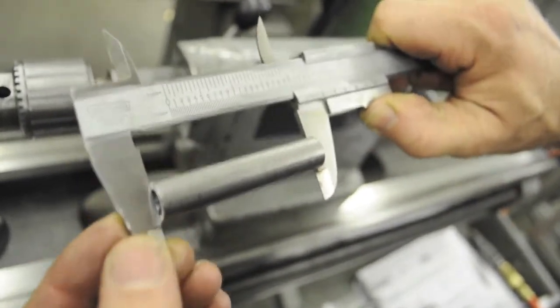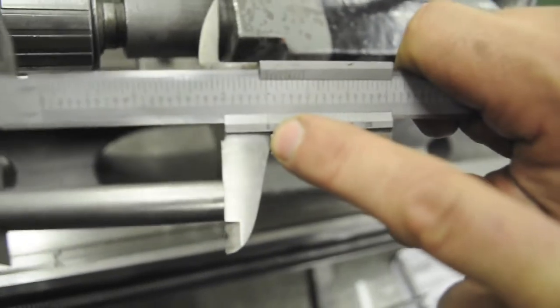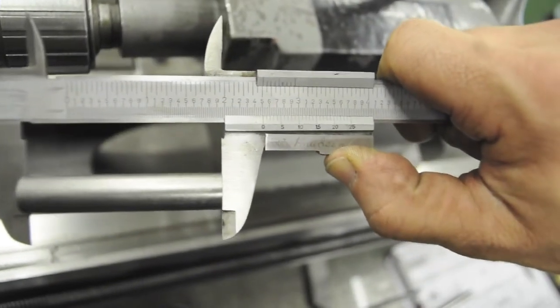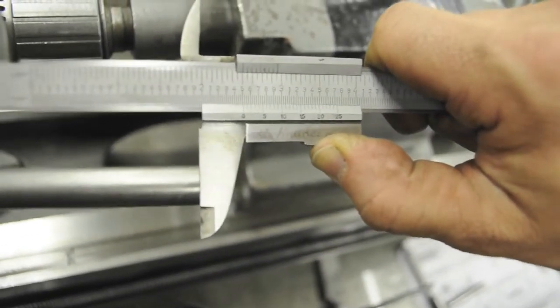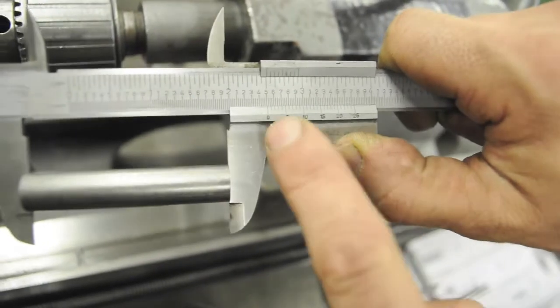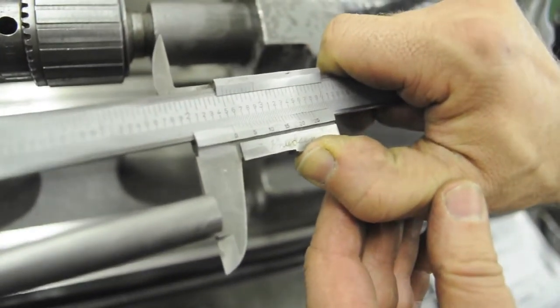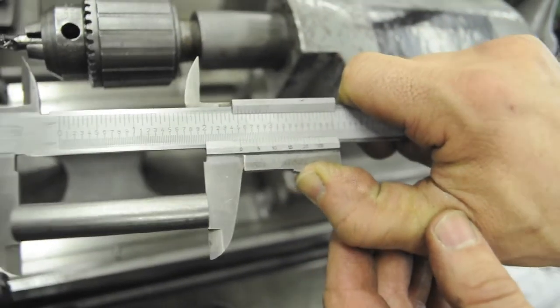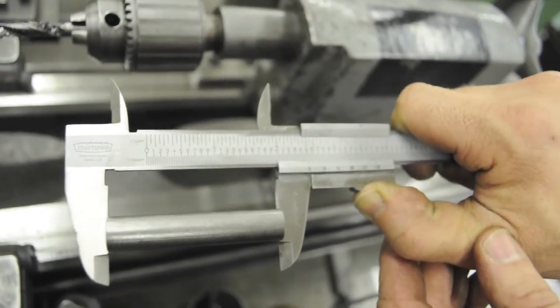Now we're at, we can see the zero line on the moving jaw is just to the right of the 2.5 line. So it's 2.5 plus something, but it's not quite to the next line, so it's less than .025. So we'll look at the lines on the moving jaw again. And it looks like we're right on the money. We're right at about the 10 line. So we have 2.500 plus .010, 2.510. We're right at the high limit.